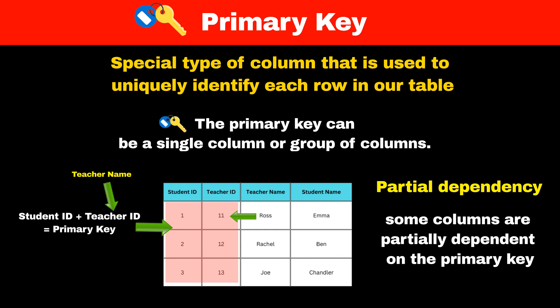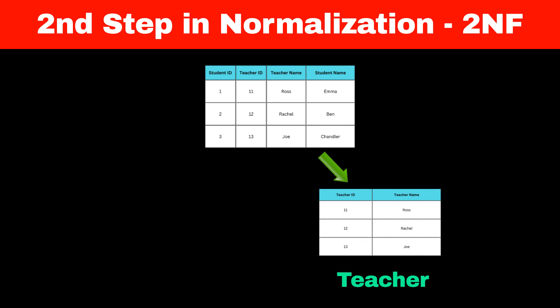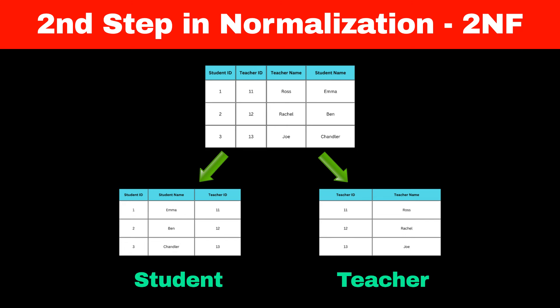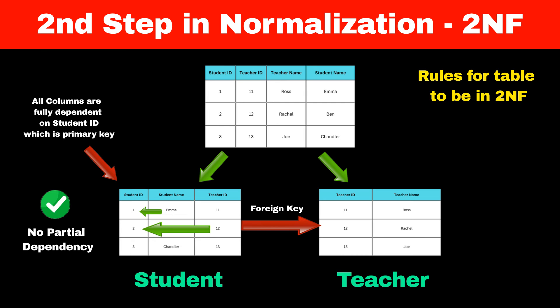The second step in normalization is to remove partial dependency, as it leads to data redundancy. To remove this dependency, we create a separate table for student and teacher. The teacher table will contain teacher ID and teacher name. The student table will contain student ID, student name, and teacher ID, which acts as a foreign key linking the two tables. Now all columns in the student table are fully dependent on student ID, which is the primary key — so partial dependency has been removed. The rules for second normal form are: it must be in first normal form, and it must not have any partial dependency.